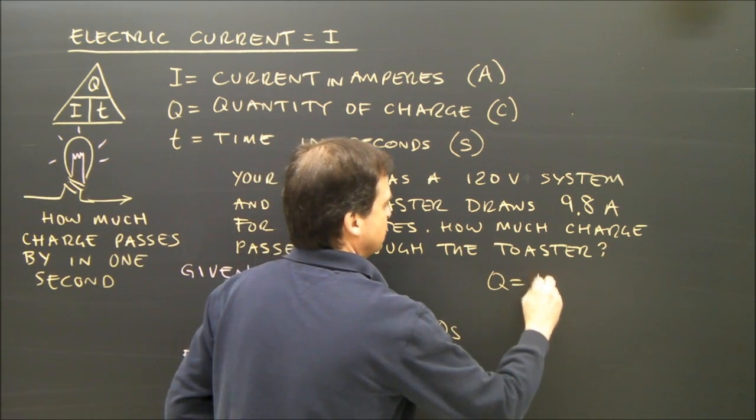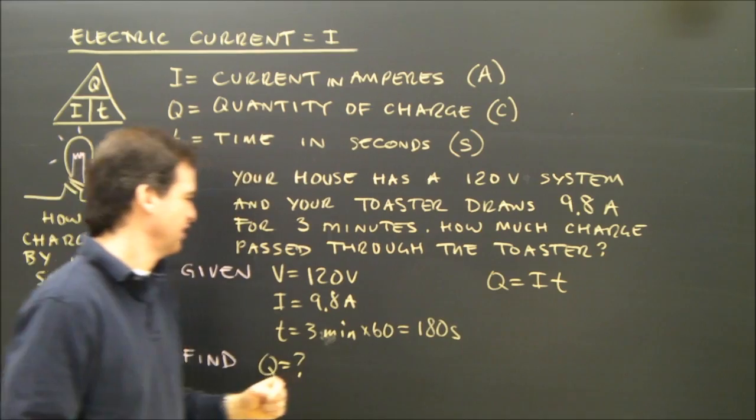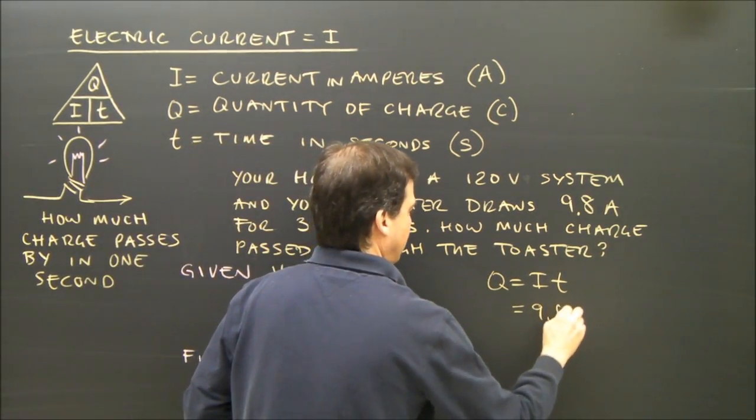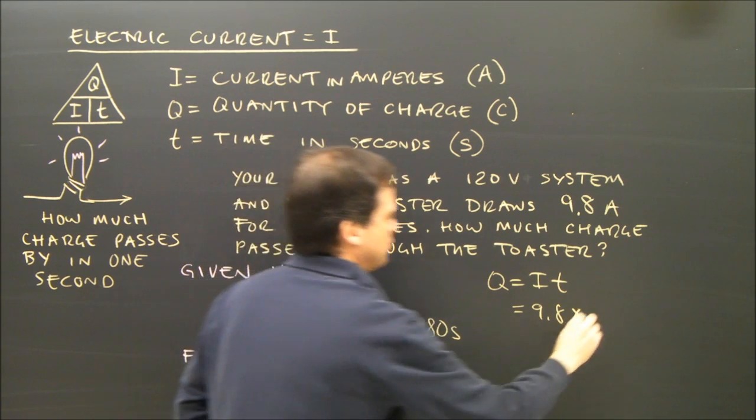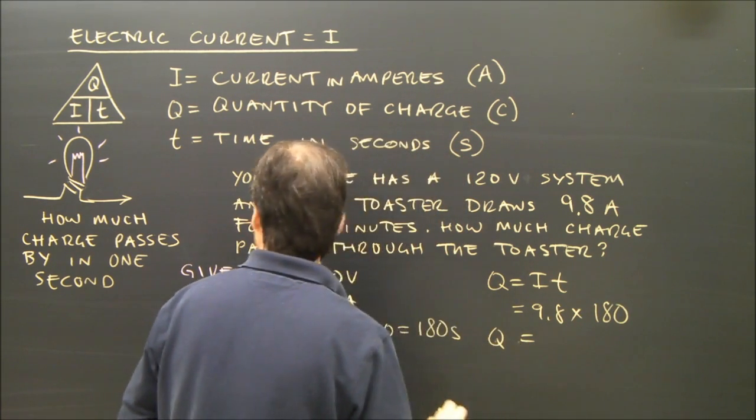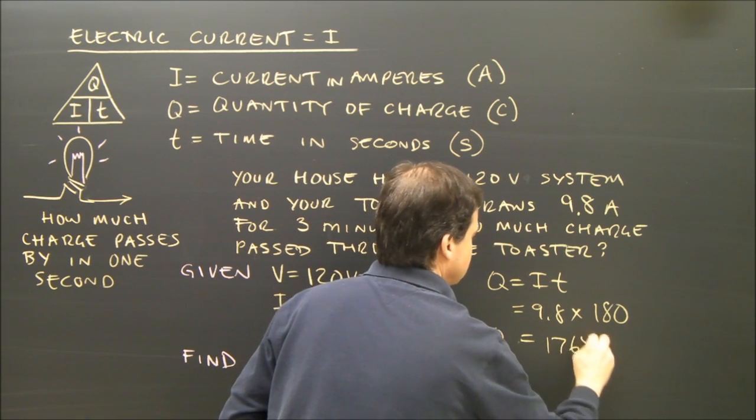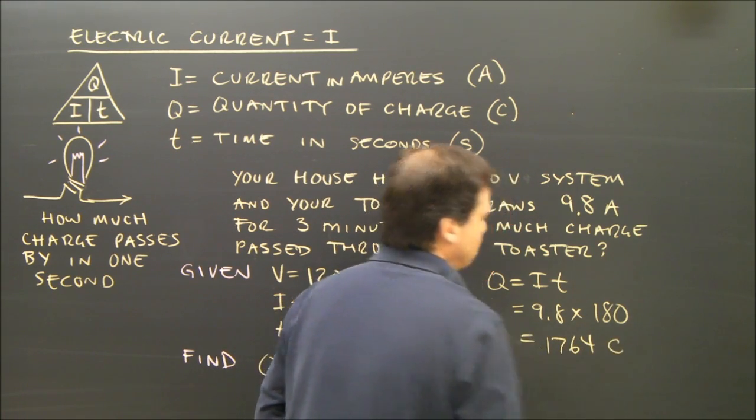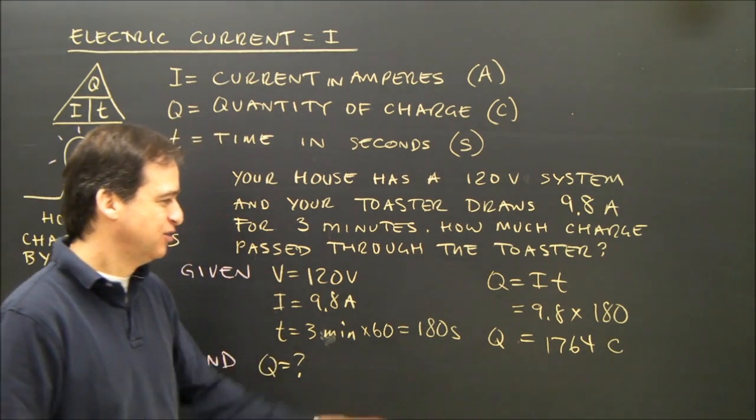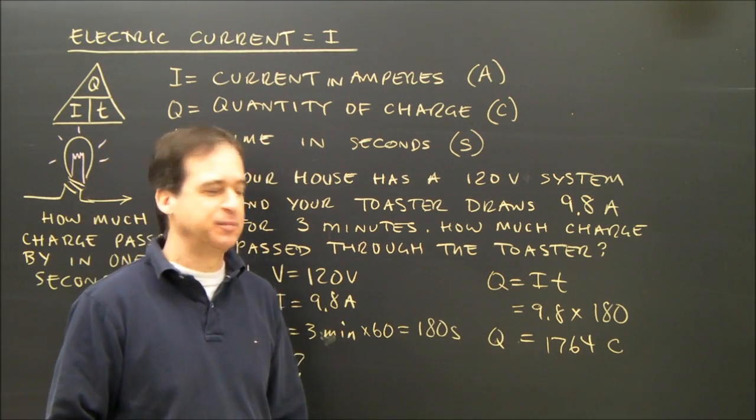So Q equals I times T. So I take 9.8 times my time, which is 180. So the total Q is 1764 coulombs. And you might have to round that off depending on what your teacher expects. You could say 1800 and that would probably be right.